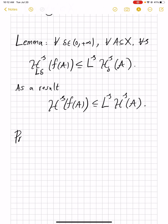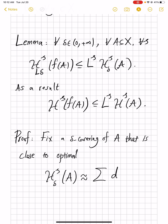The proof is quite simple. What you do is you fix a delta covering of A that is close to optimal, which means H^S_delta(A) is very well approximated by the summation of diameter E_i to power S, summation over i.